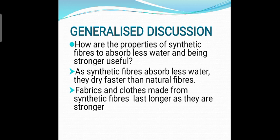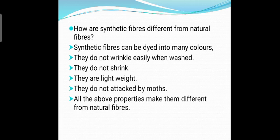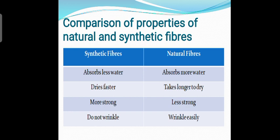Clothes made from synthetic fibers last longer as they are stronger. Synthetic fibers can be dyed into many colors, they do not wrinkle easily when washed, they do not shrink after washing, they are light in weight, and they are not attacked by moths. Now you can see the comparison of properties: synthetic fibers absorb less water, dry quicker, are more strong, and do not wrinkle after washing. Natural fibers absorb more water, take a long time to dry, are less strong, and wrinkle easily after washing.